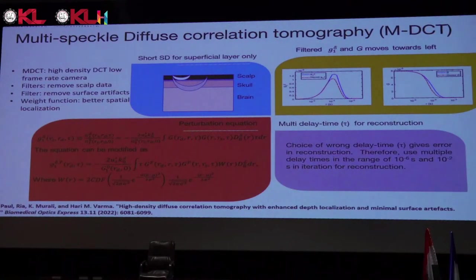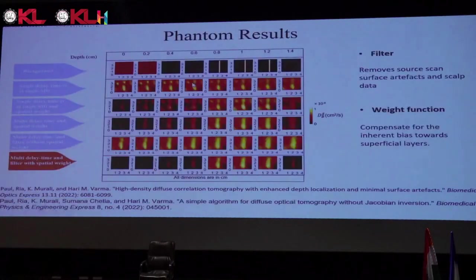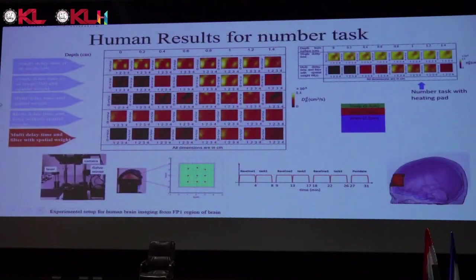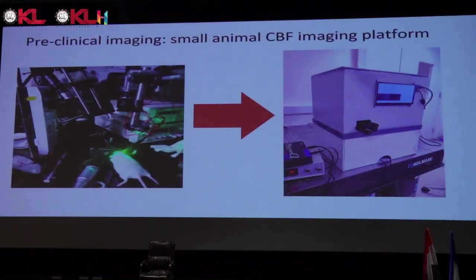To address the scalp crosstalk, we came up with an idea called filtered Green's functions — a Fourier analysis or Fourier filtering method to remove information from the scalp. We did experiments in human brain and phantoms and obtained data filtered for scalp contribution from the human brain, including tomographic reconstructions. You can look at all these results in our publications.